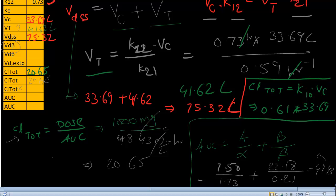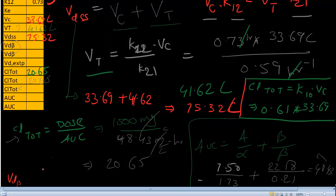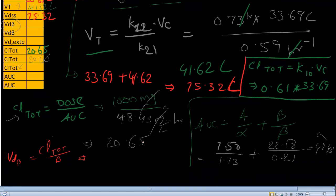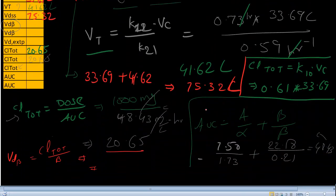Let's calculate VD beta first. So VD beta. So how do you calculate the VD beta by the way? It's clearance total over beta. So what is the clearance total we have? Clearance total just now we calculate 20.65. So 20.65 divided by the beta. What is beta slope? It is 0.21. If you solve this, you'll get a beta value of 98.11. So this is one way to solve VD beta.